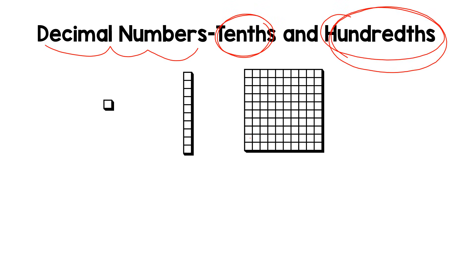Now we can't get into decimal numbers until I first very briefly remind you of the place value of what we already know. This is a ones cube. It represents one. This is a tenth stick, also called a rod or a long, and that represents ten. And this is a hundred flat, or just a hundred, and that represents one hundred.